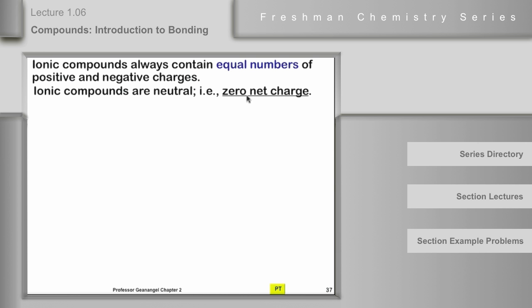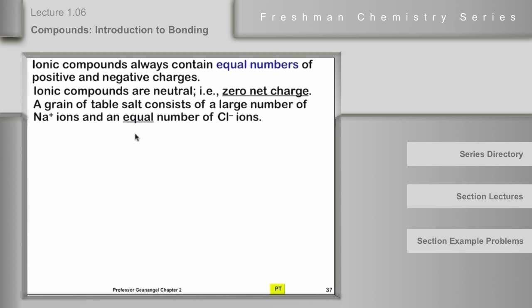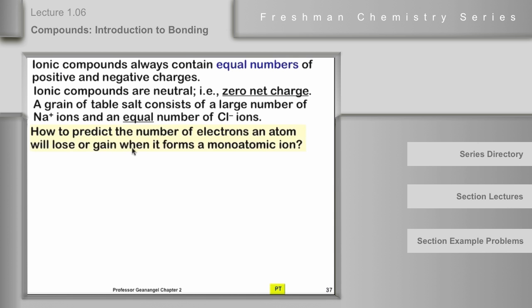And this means it will have a zero net charge. All of its positive charges will be canceled exactly by all of its negative charges. So a little grain of table salt consists of sodium chloride formulas, and each sodium chloride formula has a sodium cation and a chloride anion in it. And since there are equal numbers of ions, equal numbers of charges, there's a zero net charge on that table salt.